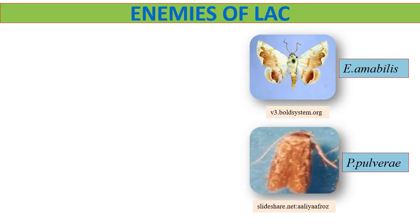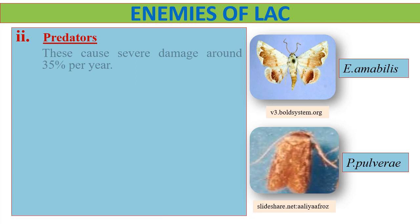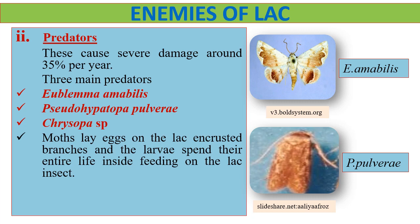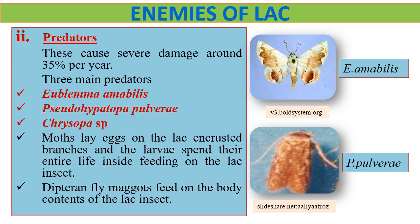Next come insect enemies as predators. Predators cause about 35% damage per year. Three main predators of lac insects are found. These are Lepidopteran species, i.e. Eublemma amabilis and Pseudohypatopa pulveri, and a Dipteran, i.e. Chrysopa species. The moths lay eggs on the lac-encrusted branches, and the larvae spend their entire life inside feeding on the lac insect. The Dipteran fly feeds on the body contents of the lac insect.